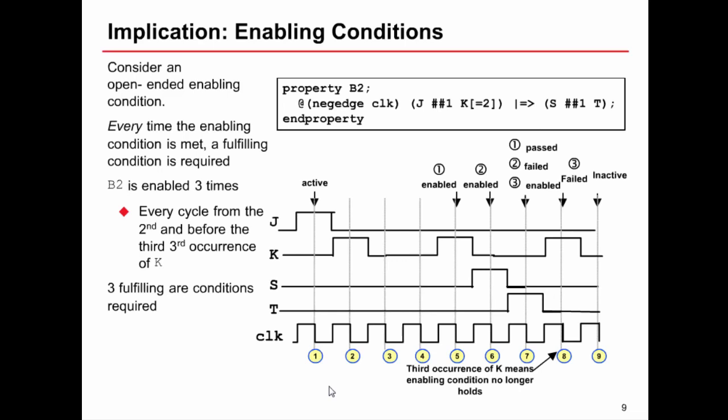We will also observe a failure at cycle eight because we enable the property again at cycle seven. This is symptomatic of describing properties where it's getting enabled more times than you desire. And we need to debug this kind of situation and be careful that we don't describe open ended enabling conditions in a way such as this. On this set of waveforms here, three fulfilling conditions are required, which probably isn't our intention. So a typical way you realize this is you see the assertion pass as expected on cycle seven, but you also see a fail at cycle seven. And you also see a fail at cycle eight.